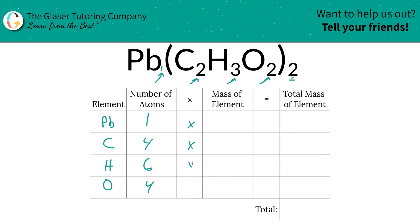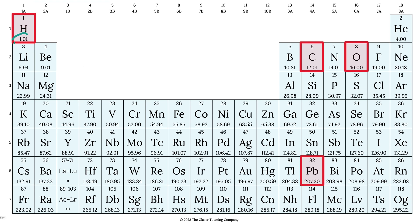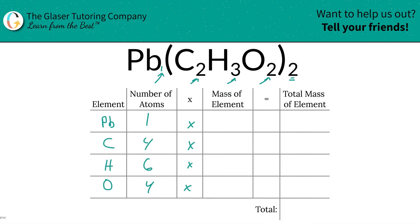So then we're going to take those number of atoms now, and we're going to multiply it by the mass of each element. You need a periodic table for this. So hydrogen is 1.01, carbon is 12.01, oxygen is 16, and lead is going to be 207.2.